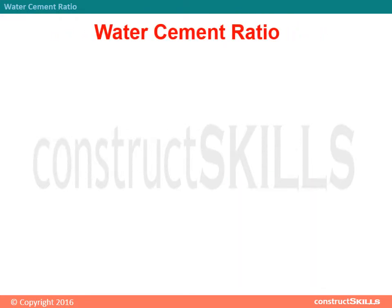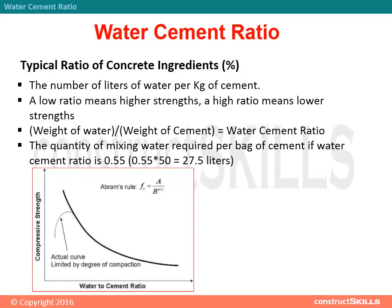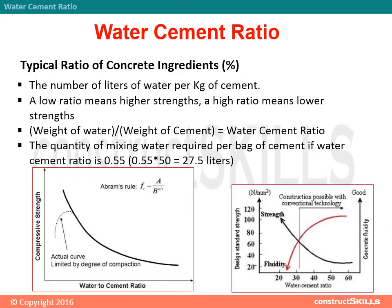Water Cement Ratio. Typical ratio of concrete ingredients — the number of liters of water per kilogram of cement. A low ratio means higher strengths; a higher ratio means lower strengths.